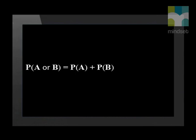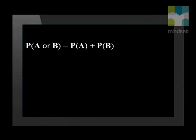Let's consider an example. A single dice is rolled — what is the probability of throwing a two or a three? These two events are mutually exclusive because a two and three cannot be thrown at the same time. Using the formula for mutually exclusive events, the probability of throwing a two or a three is one over six plus one over six, which simplifies to one over three.